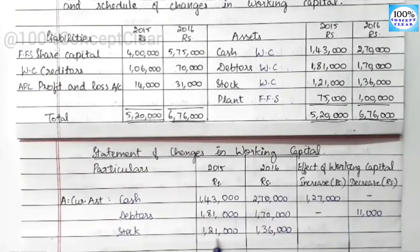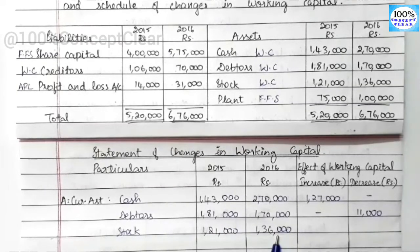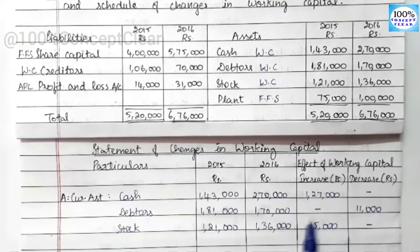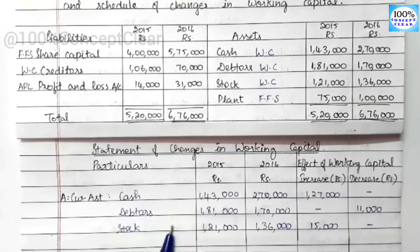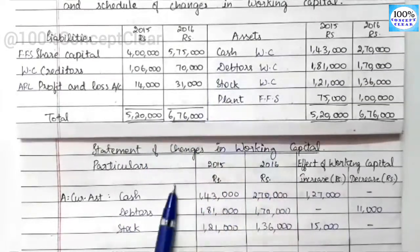Next, looking at stock: in 2015 there is 1,21,000 and in 2016 there is 1,36,000. We have an increase — the difference is 15,000 increase. So we note 15,000 in the increase column. We now have all three current asset items noted.